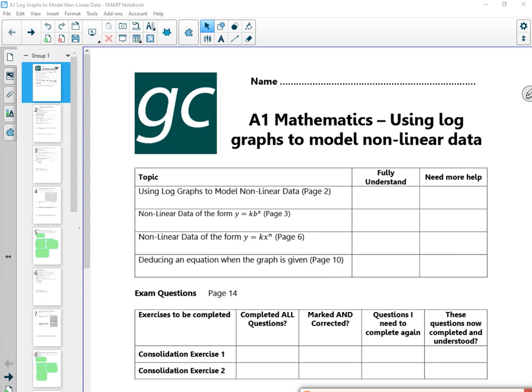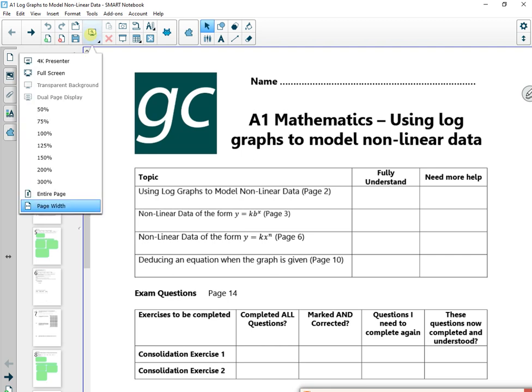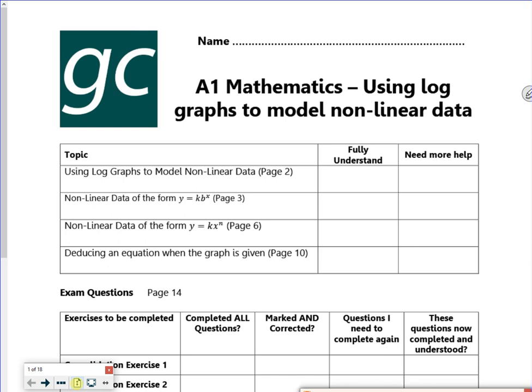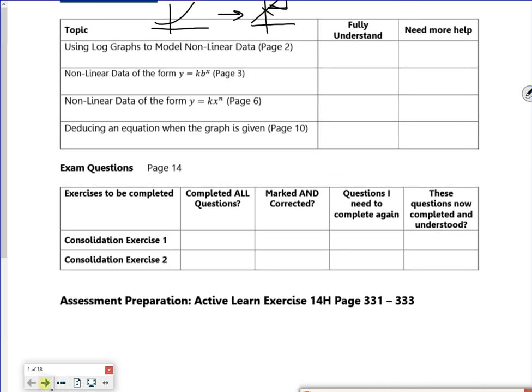Hi everyone, so this is using logs to model nonlinear data. It used to be on further maths but it's a really useful topic. The idea is that you start off with a curve and we use logs to make it into a straight line. We find the gradient and the intercept and that allows us to go back to the original curve and find unknowns that we didn't know, some constants that we find.